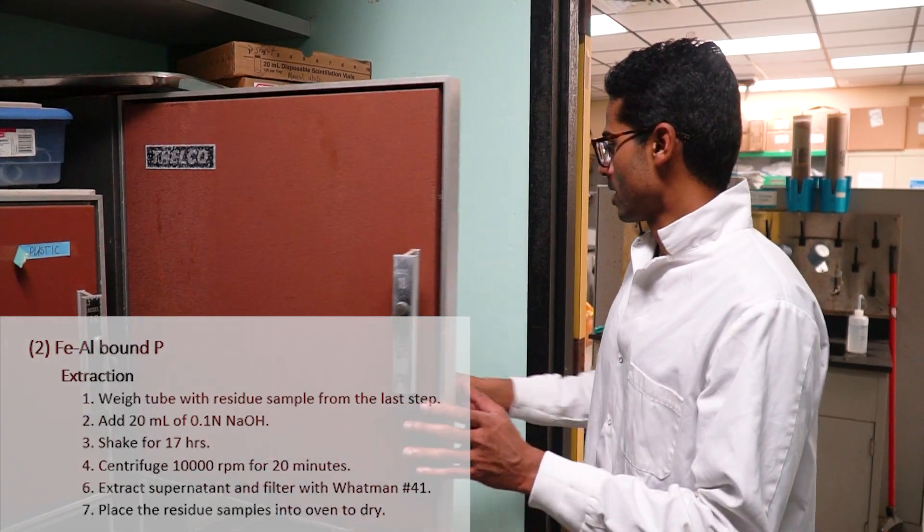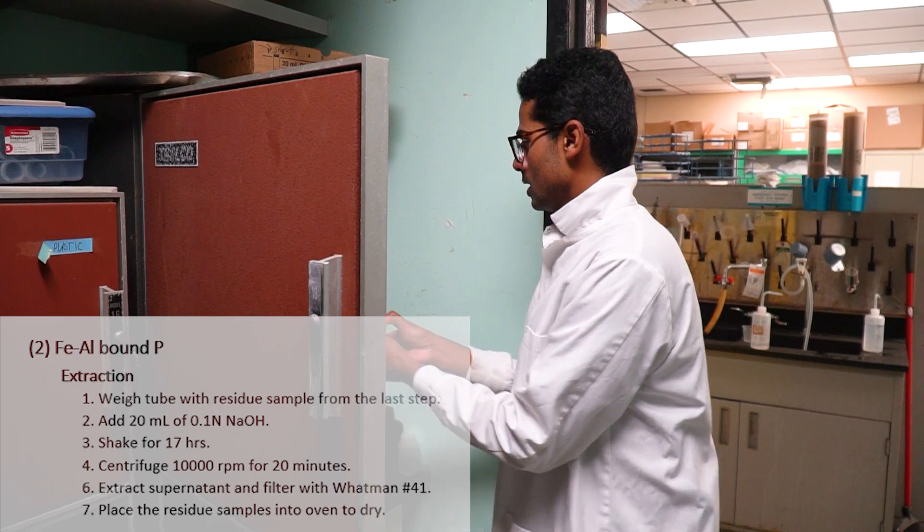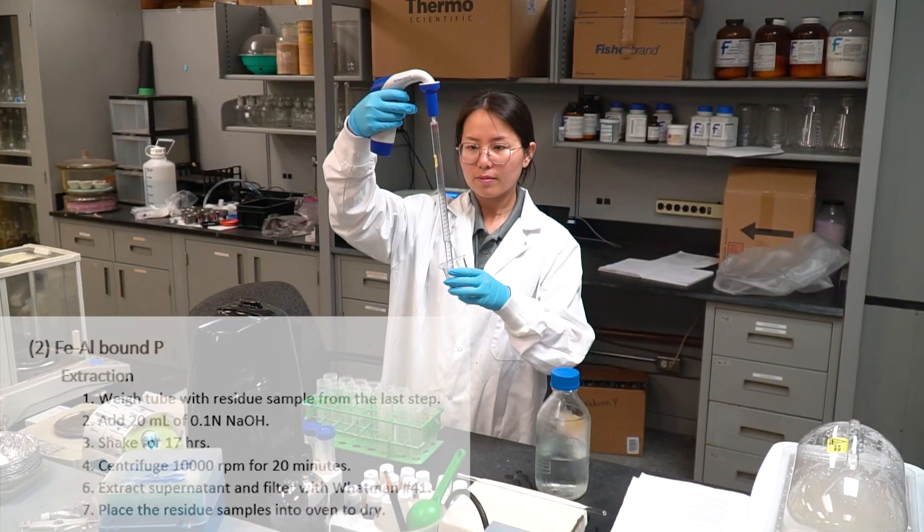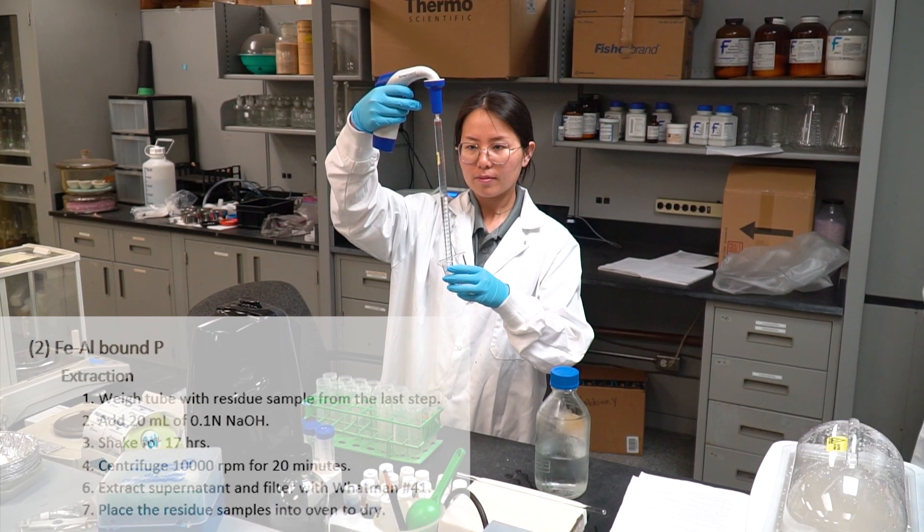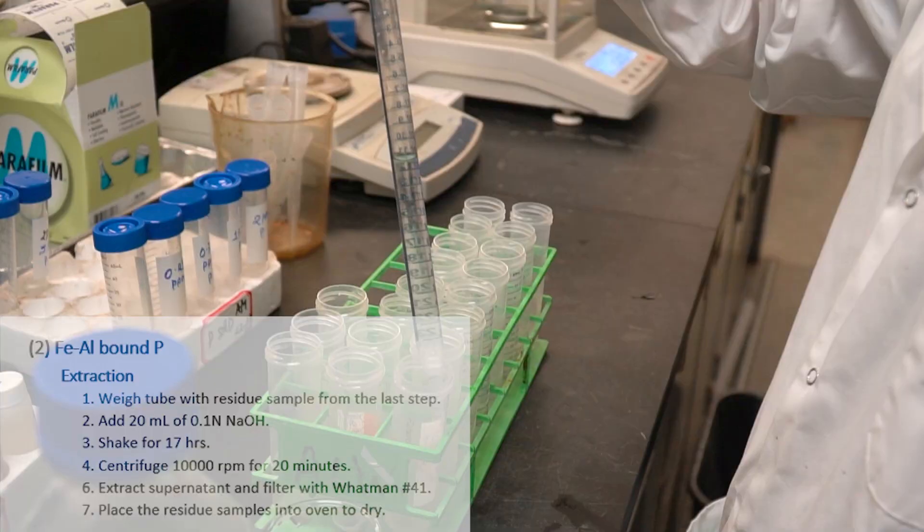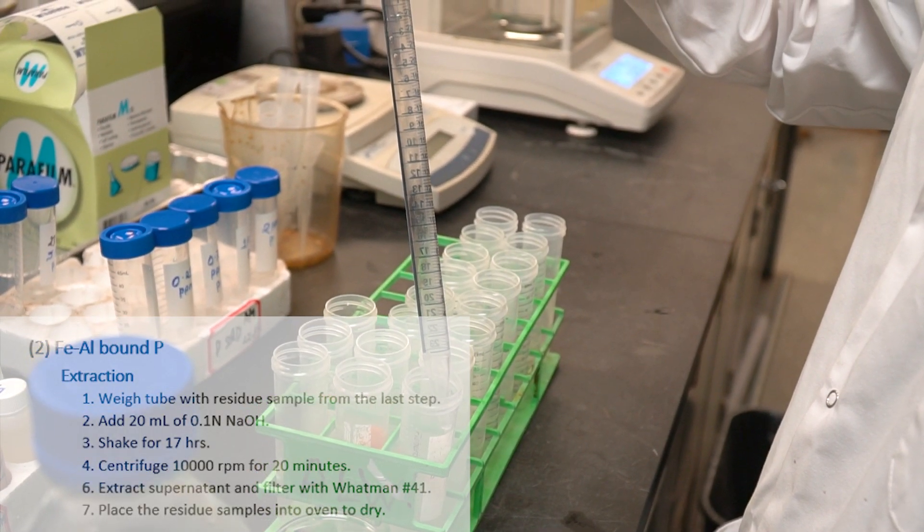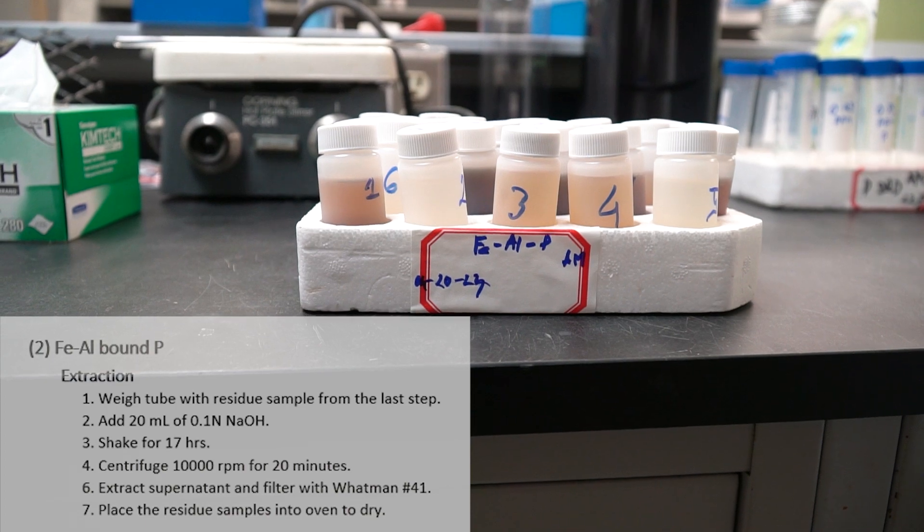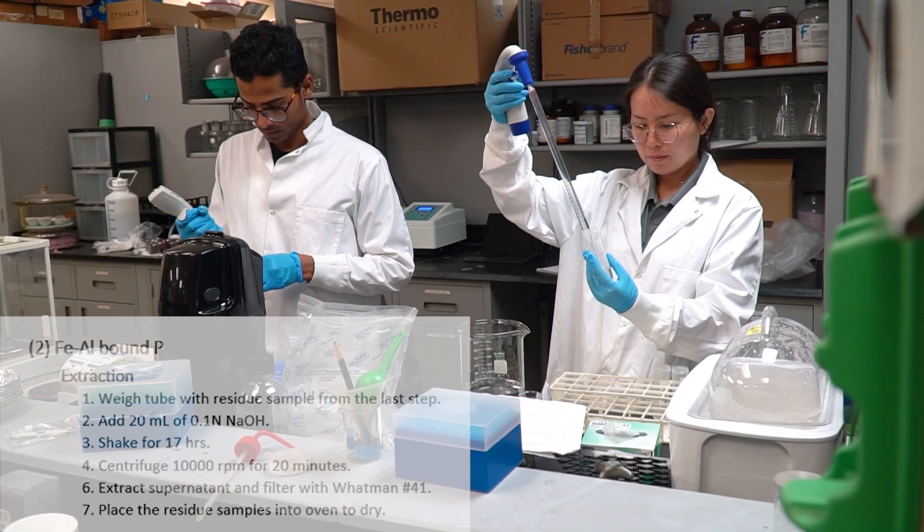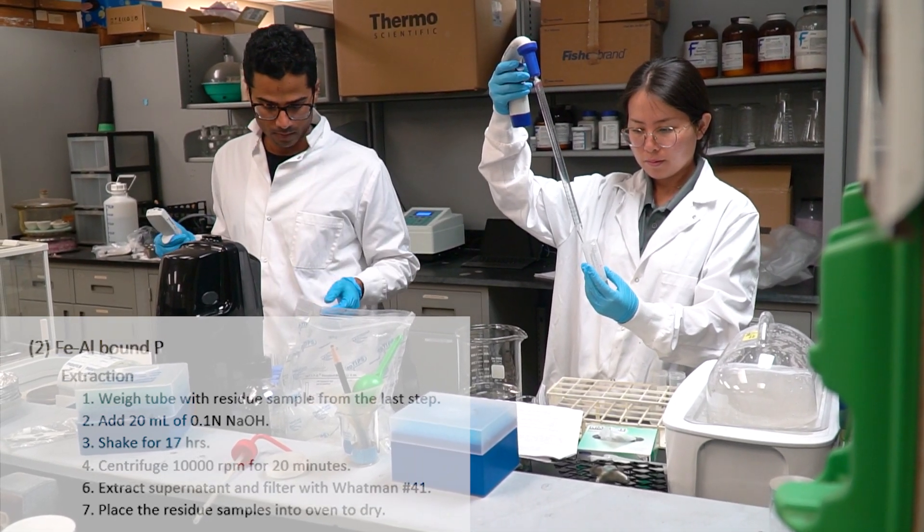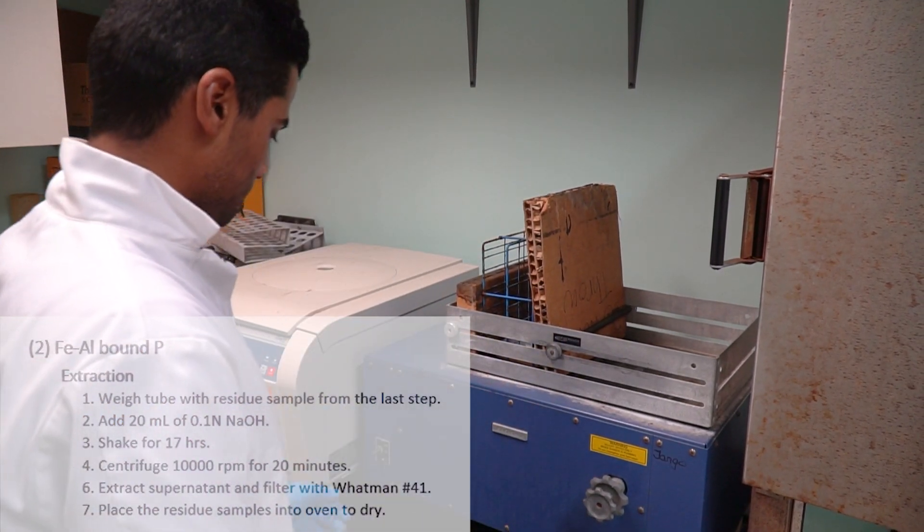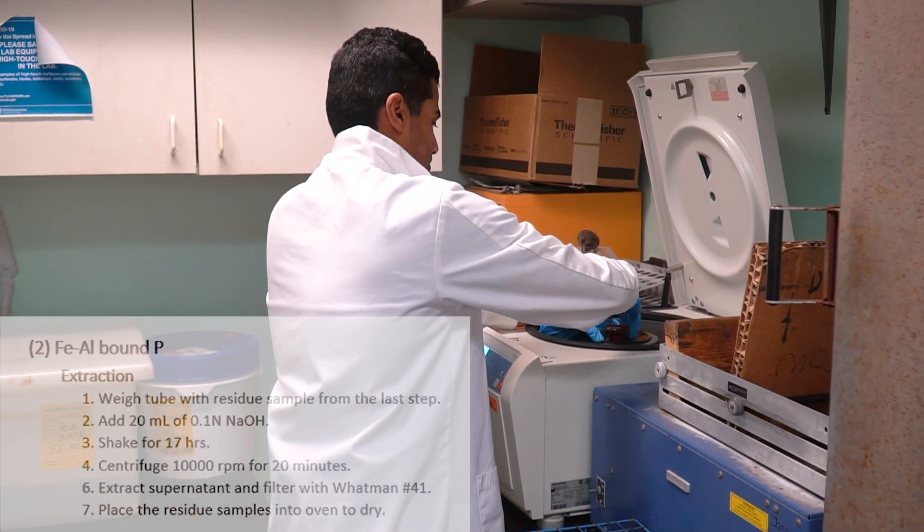For iron and aluminum bound phosphorus, first we have to take out our sample tube from oven and we have to weigh each tube followed by adding 20 milliliter of 0.1 normal sodium hydroxide to each tube. Then, we have to shake the samples for 17 hours, followed by centrifugation at 10,000 rpm for 20 minutes.